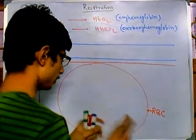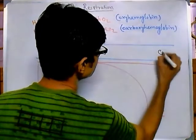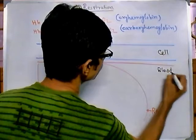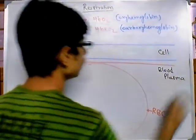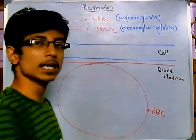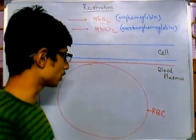Let me write: this is the cell or tissue, this is the blood stream or simply blood plasma. Okay, so this is the plasma. Red blood cell is carrying oxygen and carbon dioxide.